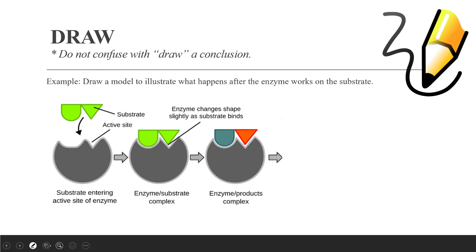We might also need to draw an illustration to represent a model. In this example, we need to draw a model using a diagram to illustrate what happens after the enzyme works on the substrate. We can predict that after the enzyme has worked on the substrate, it will break the bond that holds the substrate together and release the substrate as two disconnected products.